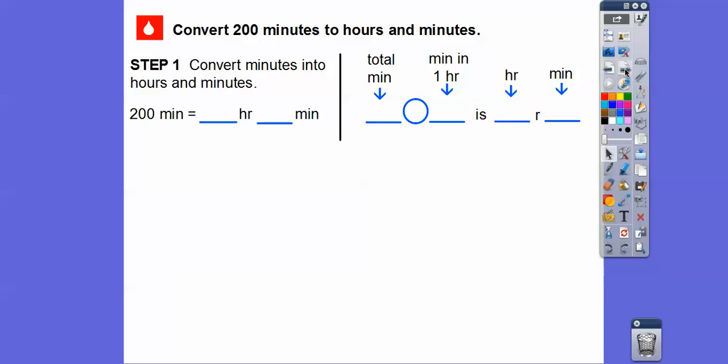We're going to convert minutes into hours and minutes. So 200 minutes is going to be how many hours and minutes. We're going to take that 200 and divide by 60 minutes per hour. So 60 goes into 200 three times and we get 180. 3 times 6 is 18 with that 0 is 180. When we subtract, we get 20 and we're done dividing because 60 can't go into 20.